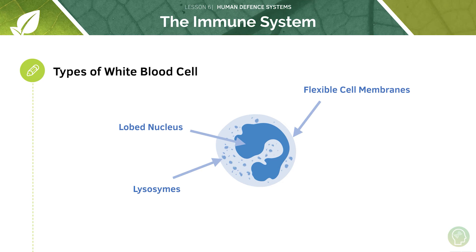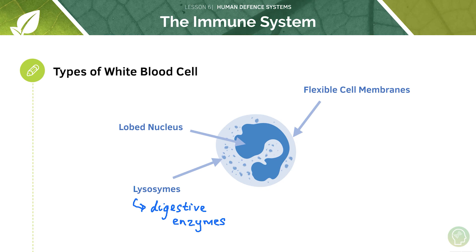Looking at the structure of a white blood cell, they often have characteristic lobed nuclei visible under a microscope. Within the cytoplasm are lysosomes, which contain digestive enzymes responsible for degrading the pathogen. White blood cells also have flexible cell membranes, which is really important in the process of phagocytosis — because if a white blood cell is going to engulf a pathogen, it needs to be able to morph in order to move around the pathogen.